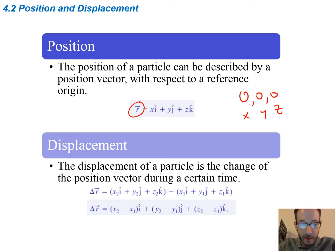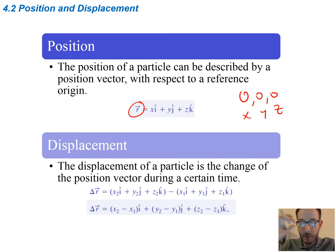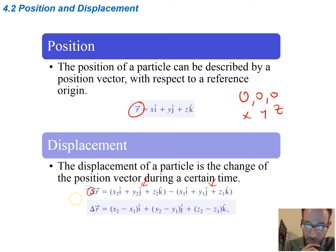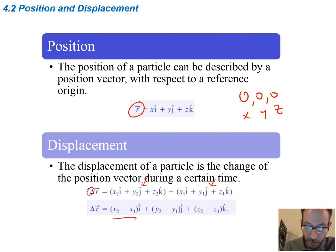The displacement is going to be the change in position vector during a certain amount of time. To show the change in position, all I would do is take the second position and subtract the first position — the final minus the initial — just like we do with the delta symbol in other cases. To do that we can look at each term separately: take the subtraction of the i-term, subtraction of the j-term, and subtraction of the z-terms together.